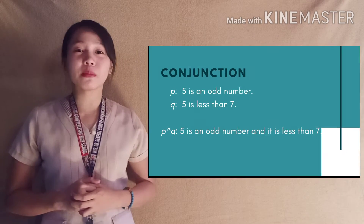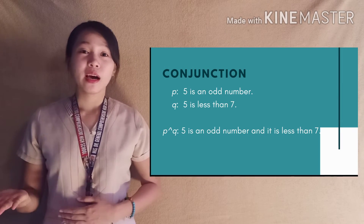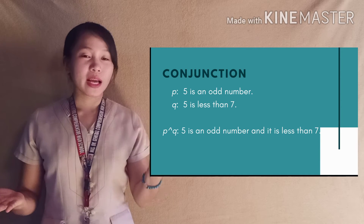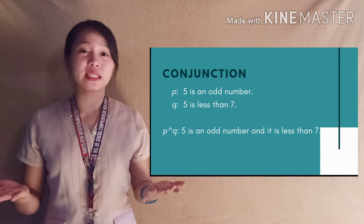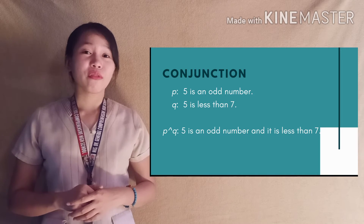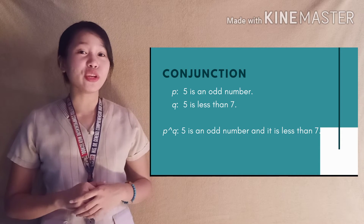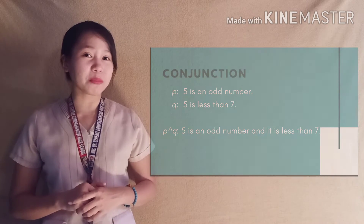Here are examples of each. Let's start with conjunction. Consider two simple propositions: P — 5 is an odd number, and Q — 5 is less than 7. Therefore, our conjunction would be: 5 is an odd number and it is less than 7. What other examples can you think of?